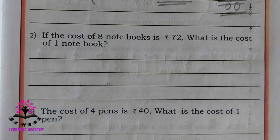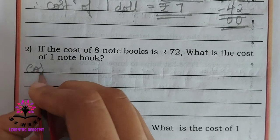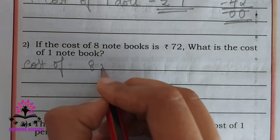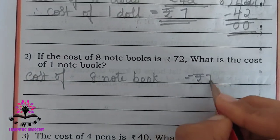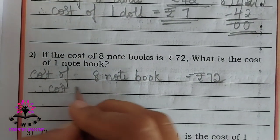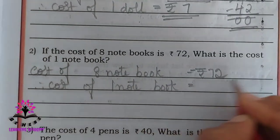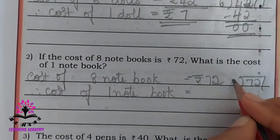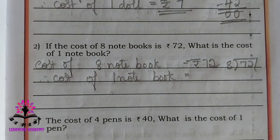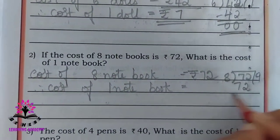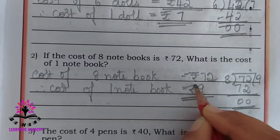If the cost of 8 notebooks is rupees 72, what is the cost of 1 notebook? Cost of 8 notebooks is Rs. 72. Therefore, cost of 1 notebook is 72 divided by 8. 8 nines are 72. Remainder is 0, quotient is 9. So the answer is Rs. 9.